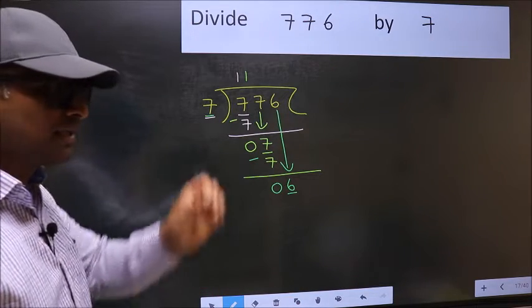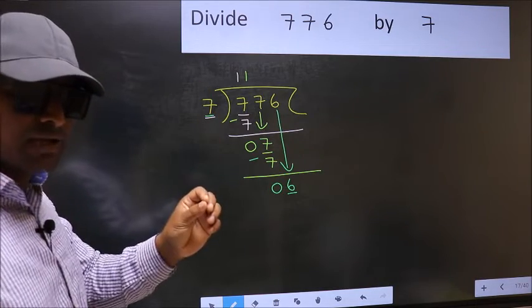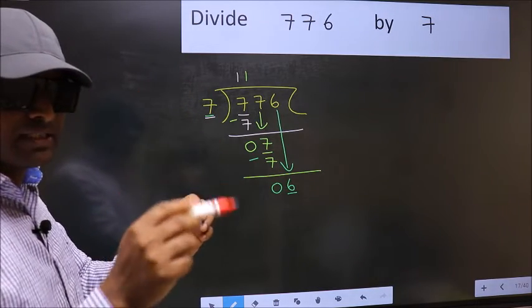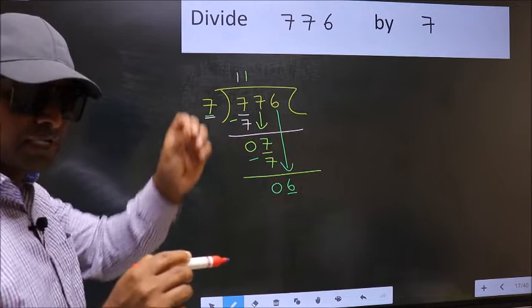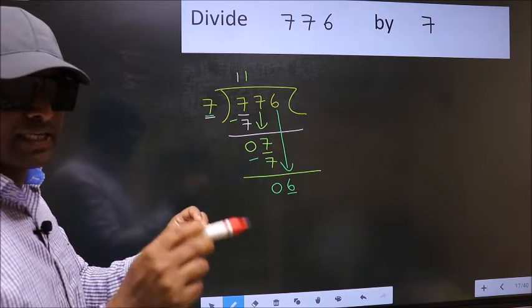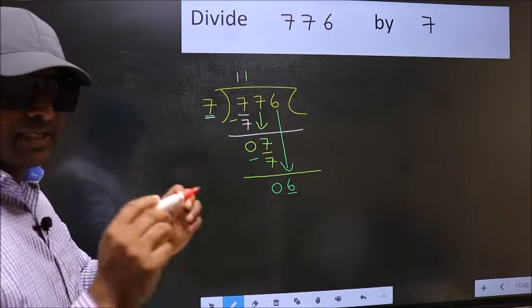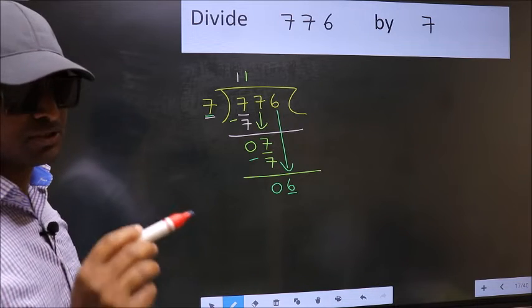I repeat. Bringing the number down and also putting dot and taking 0, both at the same step, you should not do.